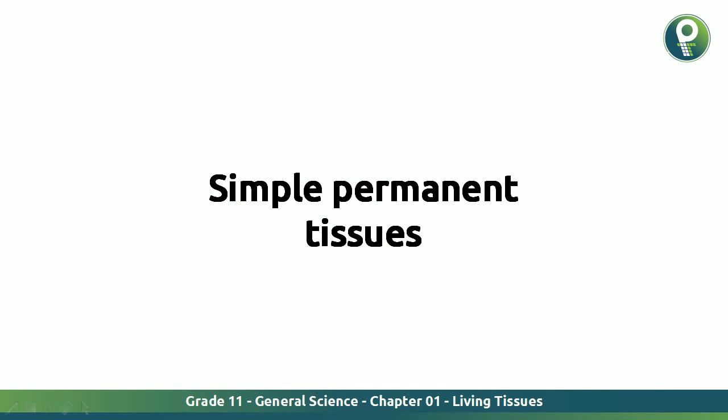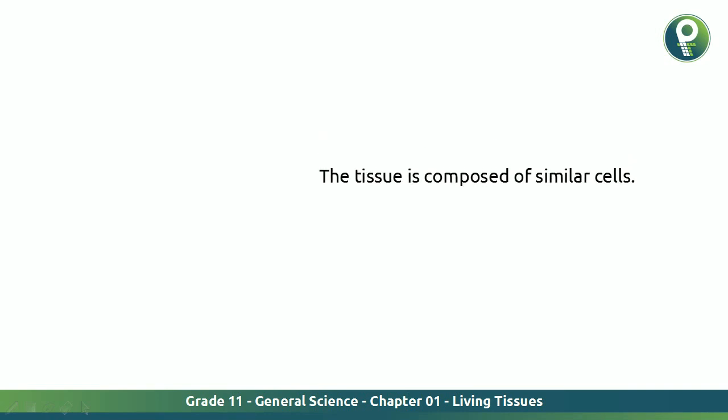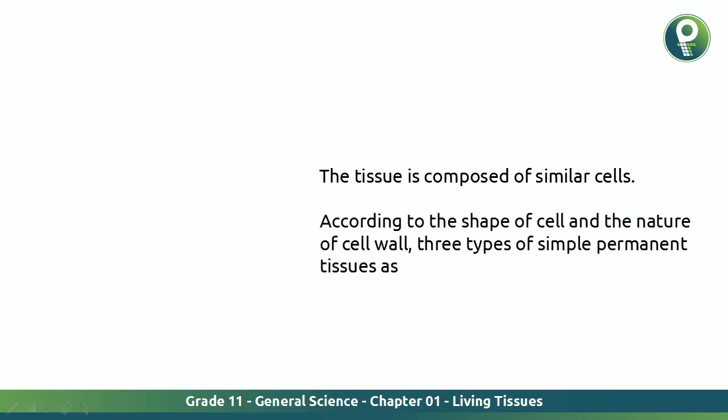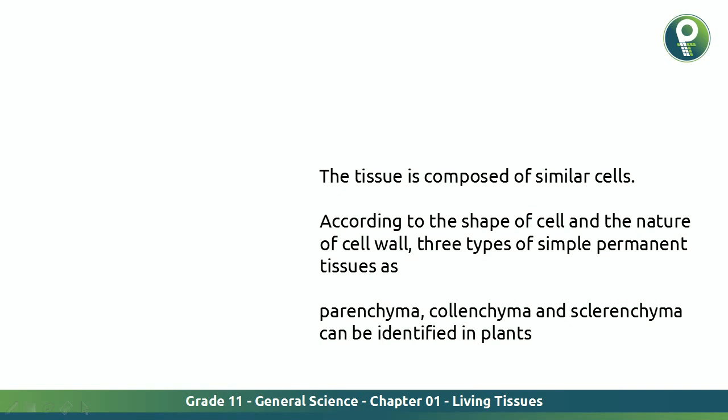We'll talk about the simple permanent tissue as we promised. Simple permanent tissue is the tissue composed of similar cells. According to the shape of the cell and the nature of the cell wall, three types of simple permanent tissues — parenchyma, collenchyma, and sclerenchyma — can be identified in plants.